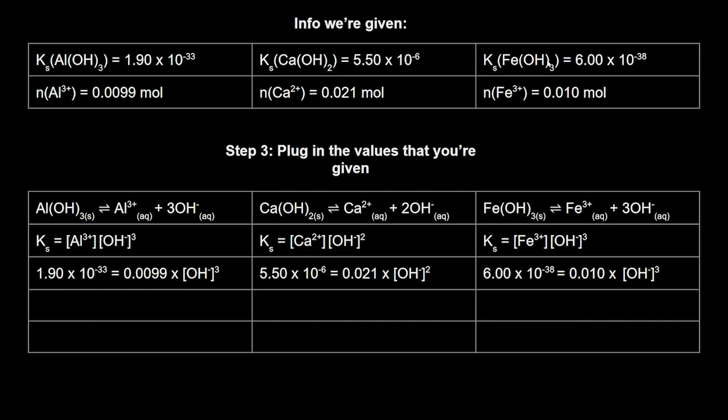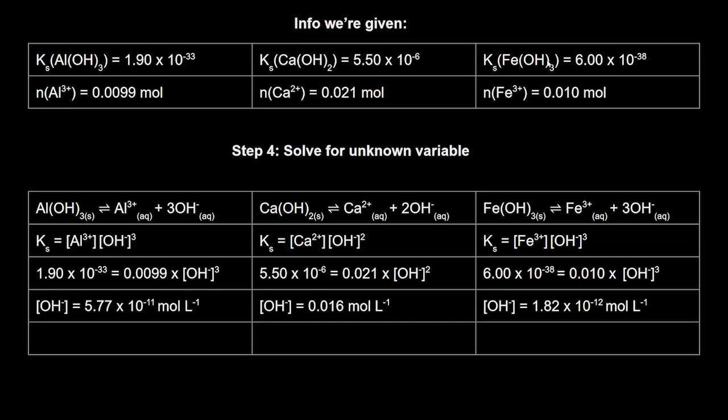So there we go. I've plugged in what I know. I plugged in the Ks values and I plugged in the concentrations of the metal ions and for all three of these solubility product expressions I see that I have one unknown in all three equations and that's the concentration of hydroxide. Okay, I love equations where there's only one unknown that tells me I can solve for it and I'm probably on the right track. So let's solve for that.